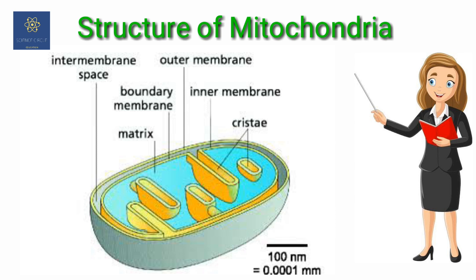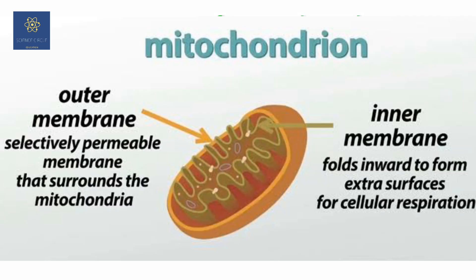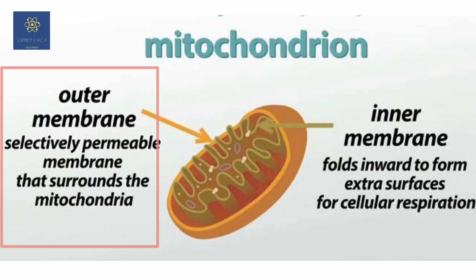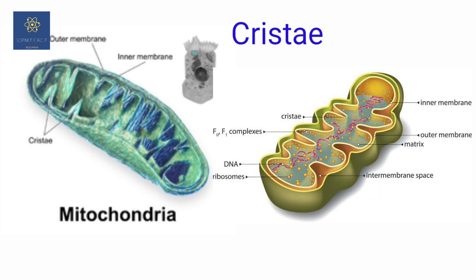The outer and inner membranes divide the lumen into two aqueous compartments: the outer compartment and the inner compartment. The outer membrane is permeable to certain ions and small molecules, forming a continuous limiting boundary of the organelle. The inner membrane forms a number of foldings called cristae towards the matrix.